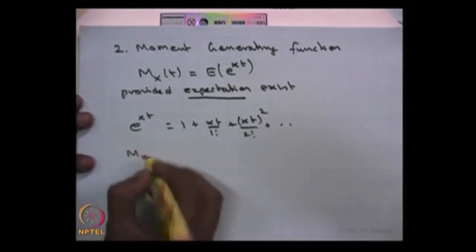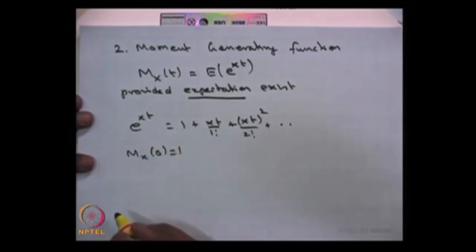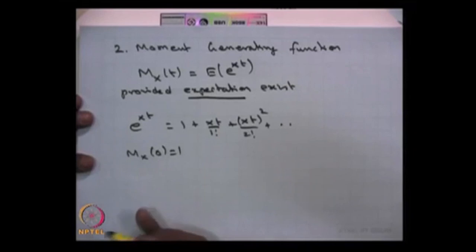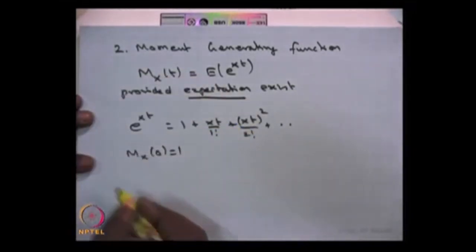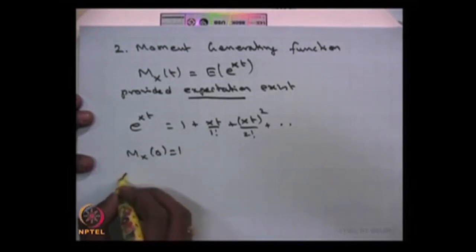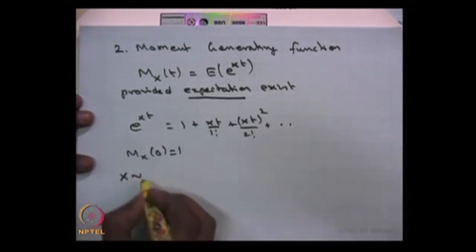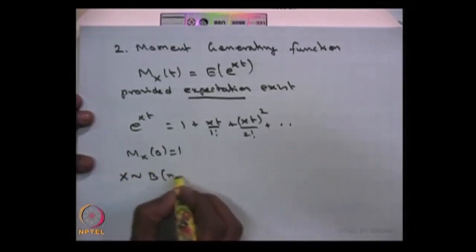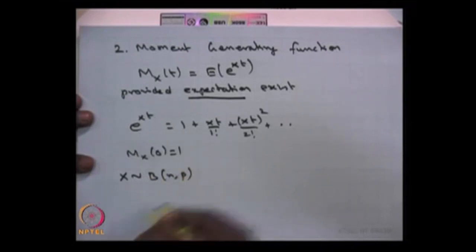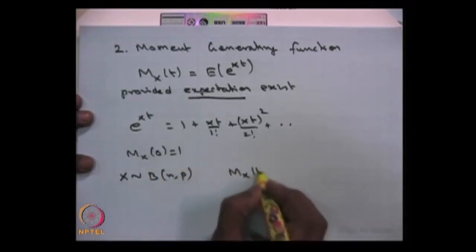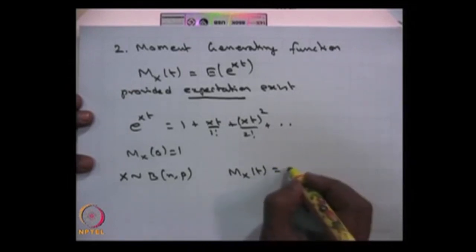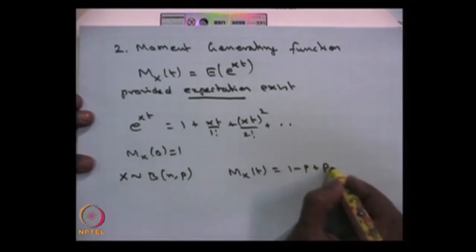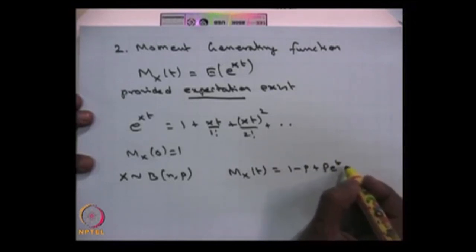There are many properties of the MGF. One property is that Mx(0) is equal to 1. There are also properties relating the moment of order n with the derivative of the moment generating function. A simple example: if X is a binomial distribution with parameters n and p, then the moment generating function for the random variable X is going to be (1 minus p plus p times e power t) power n.